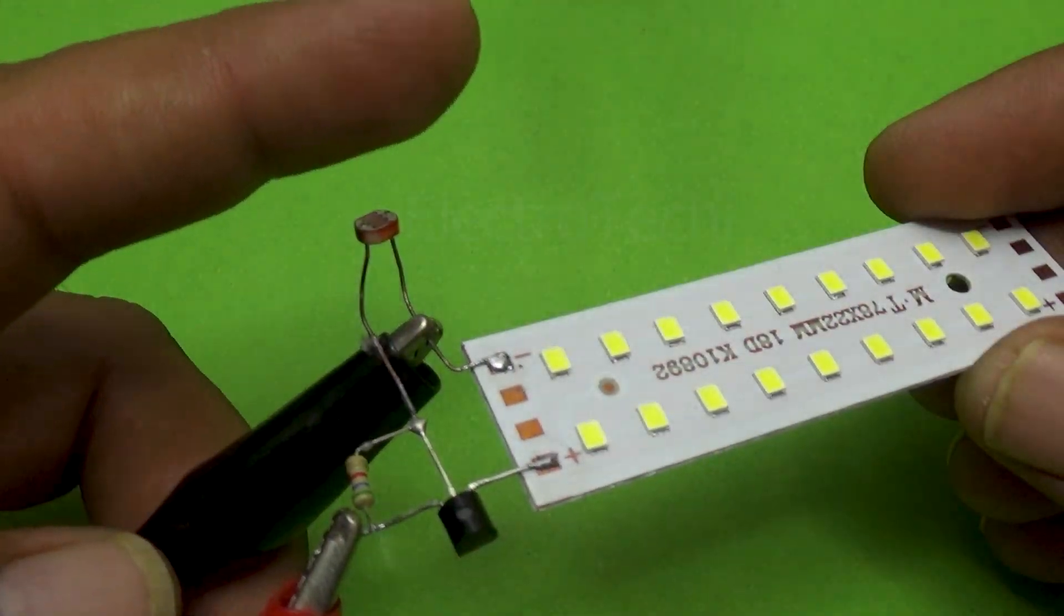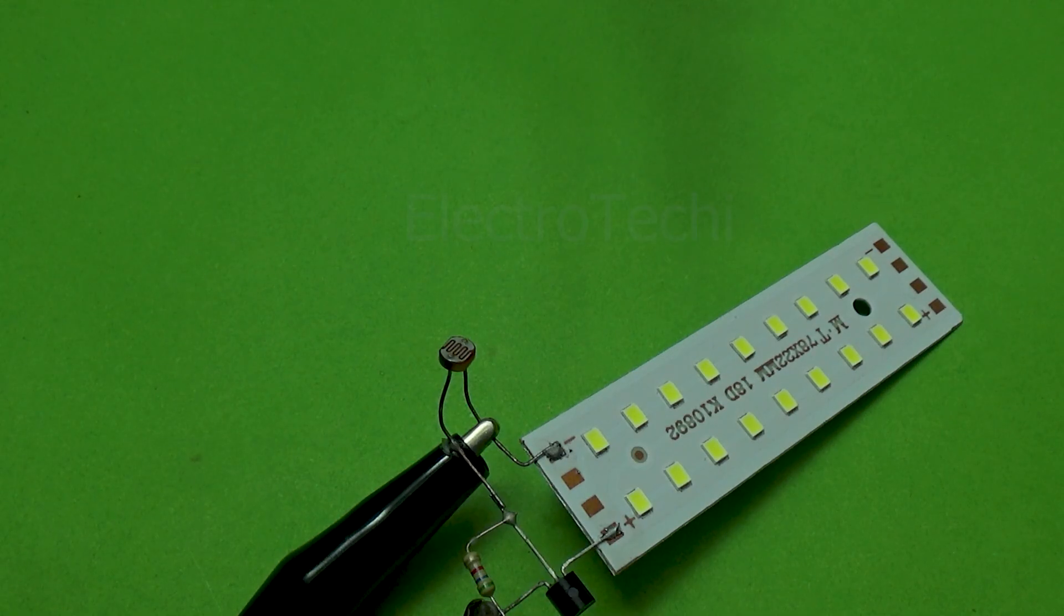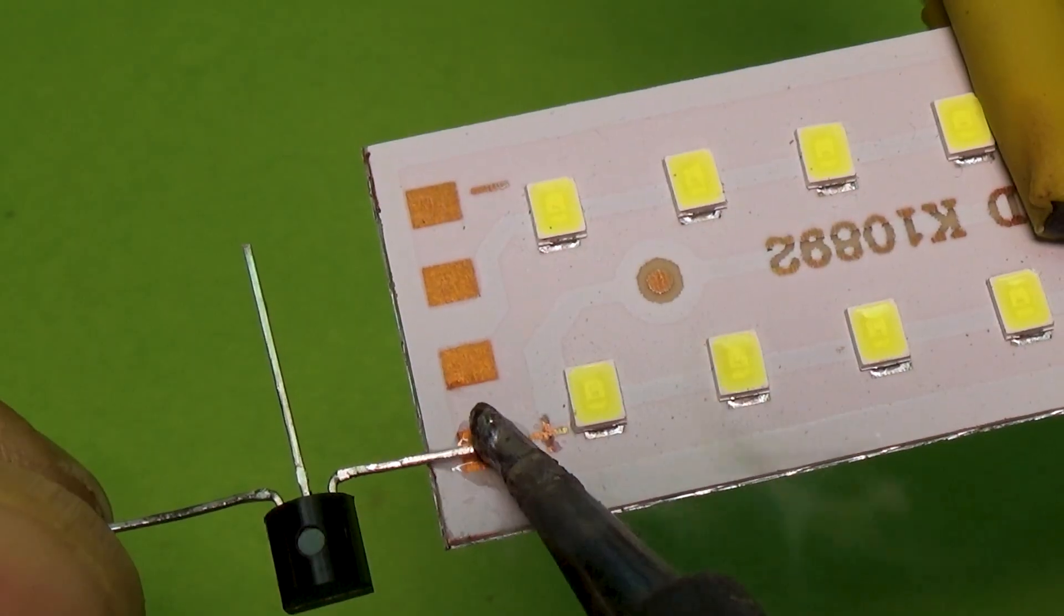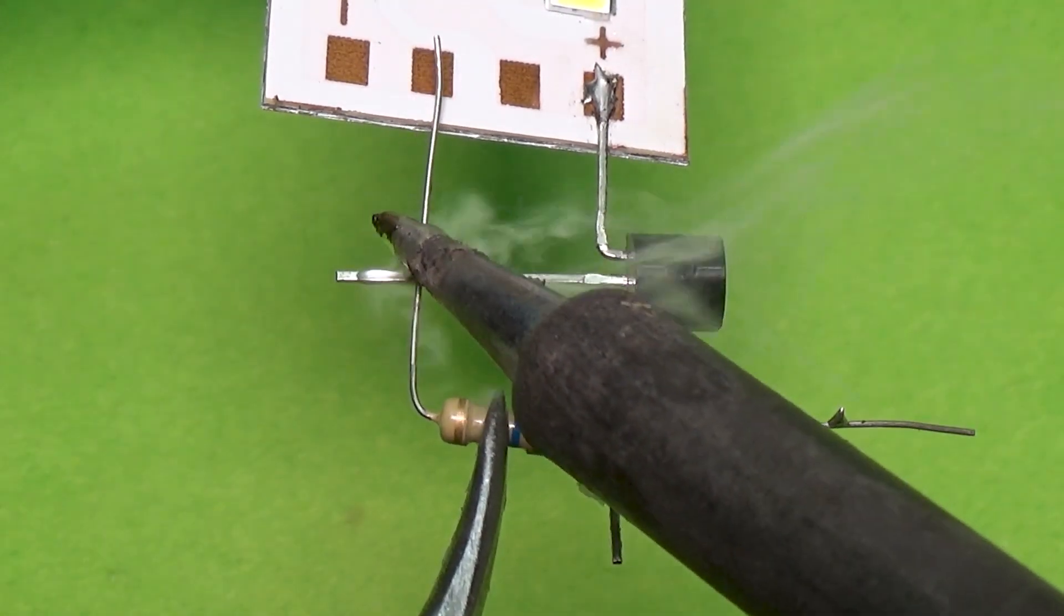Have you ever wondered how to make an LED light up automatically when it gets dark? Well, in this video, we're going to build a simple and smart dark sensor circuit using just a few basic components.